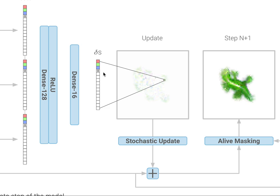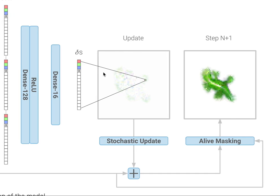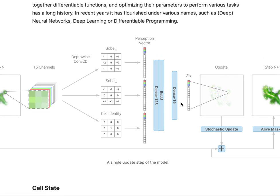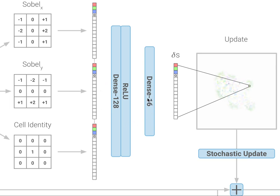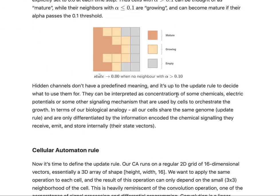So basically, the update rule determines which cells need to come alive in the next time step, which cells need to die, and how they change their colors. You get the output of the next step. All that is learned is the update rule of the neural network — the neural network looks at a cell and its neighbors and decides what the information in the cell in the next step should be. And you do this for multiple time steps.